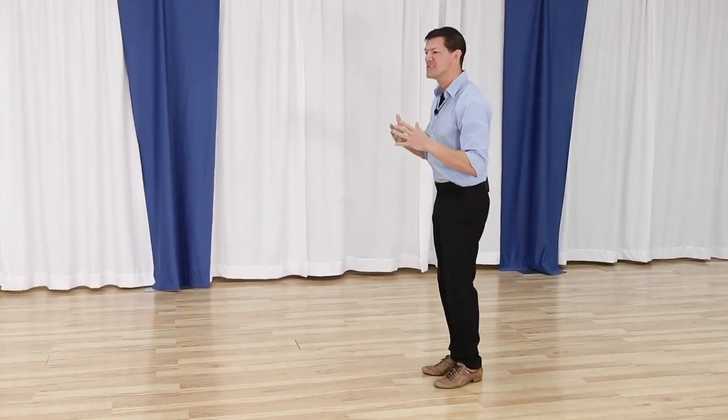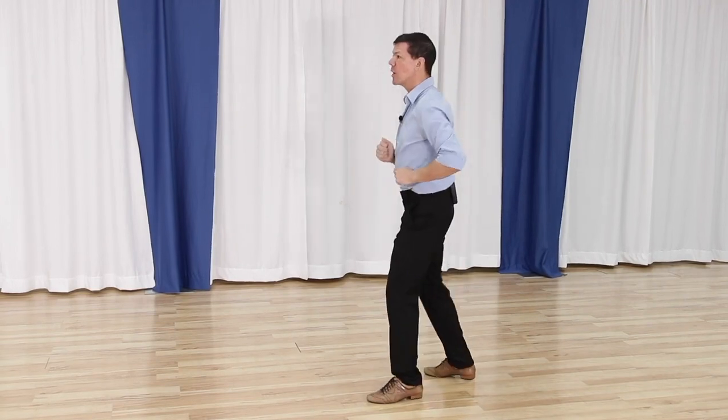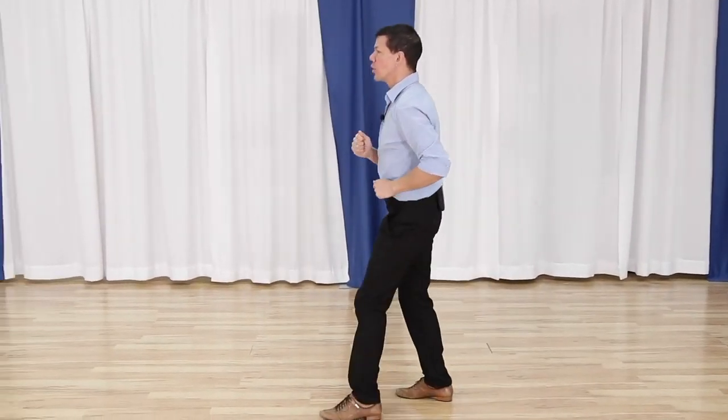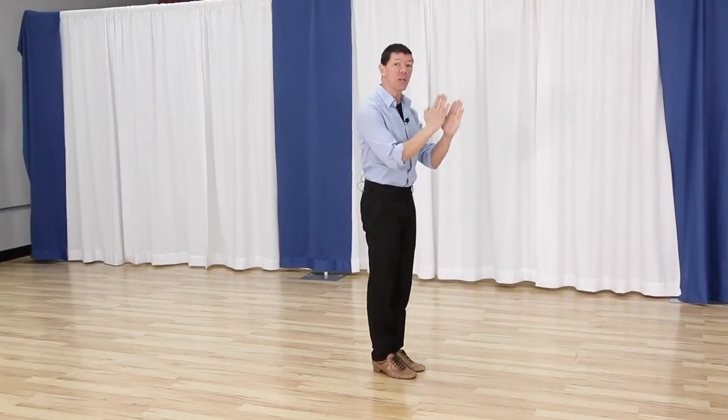So this is what you might see for a Texas two-step: quick, quick, slow, slow, quick, quick, slow, slow. And really it's just an evolution of the foxtrot into the two-step. But progressive two-step officially would be passing our feet on every step.